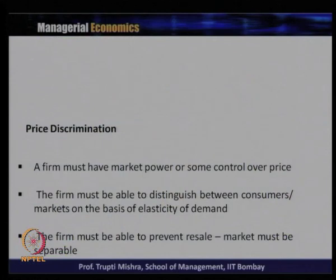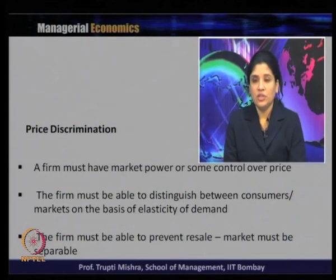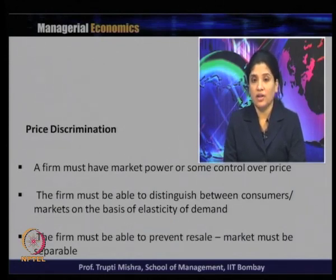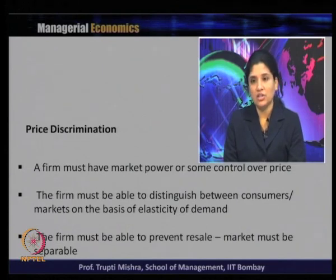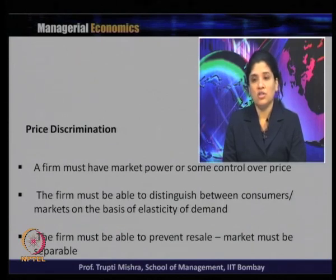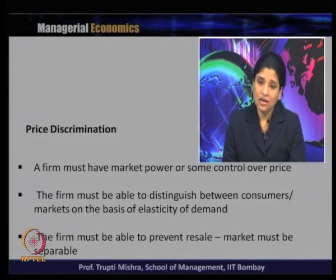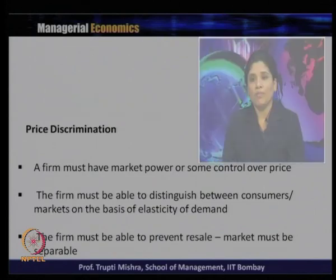The firm must have market power and some control over price, as present in a monopolist market, and that is why they practice price discrimination. The firm must be able to distinguish between consumer markets on the basis of elasticity of demand. The firm must also be able to prevent resale — markets must be separable — so you cannot buy at a lower price in one market and sell it in another.